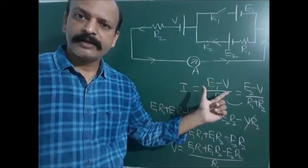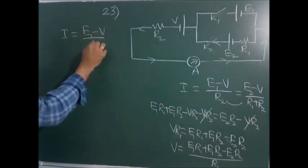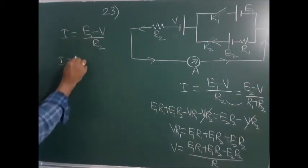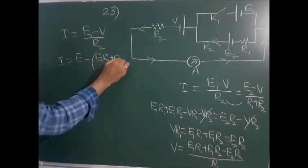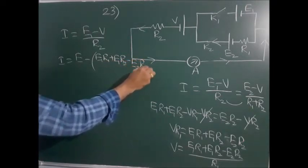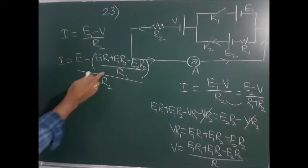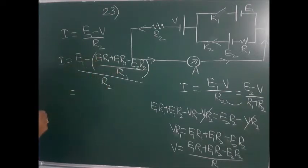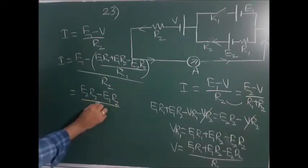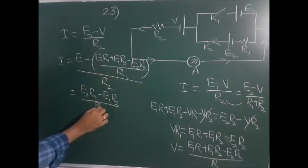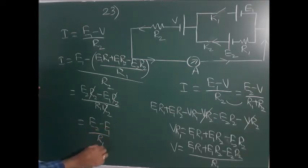Substituting back into the current equation i = (e1 - V) / r2, and substituting the expression for V, after simplification: e1·r1 cancels, leaving (e2·r2 - e1·r2) / (r1·r2). Since r2 is common and cancels, the current i = (e2 - e1) / r1.